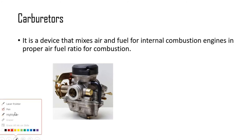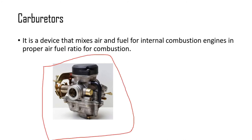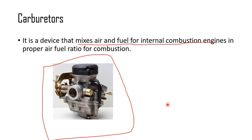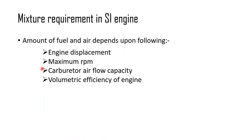This is a carburetor — it mixes air and fuel for the internal combustion engine. The proper mixing of fuel is done and then the fuel is sent to the cylinder. The amount of fuel going to the cylinder depends on engine displacement, maximum RPM needed, carburetor air flow capacity, and volumetric efficiency of the engine.